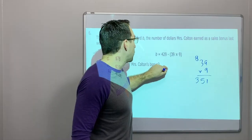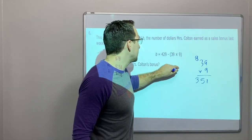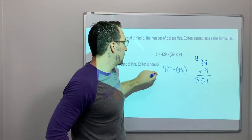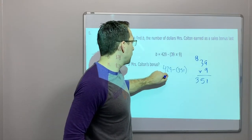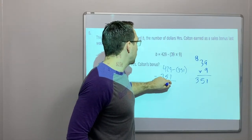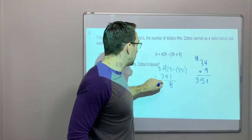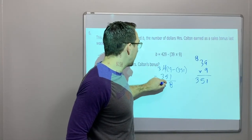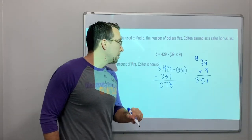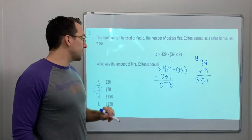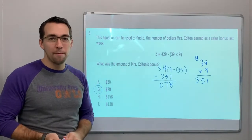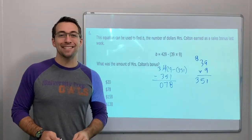So now we have 429 minus 351. Let's do that right here. 9 minus 1 is 8. Borrow from the 4, so we have 3 minus 3 is 0. 12 minus 5 is 7. 78. $78 was her bonus last week. Awesome. Hope you guys enjoyed the video. We'll see you next time.